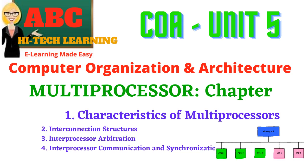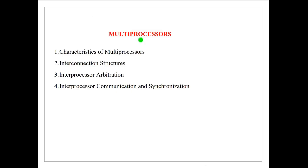Hello viewers, in this video we are going to discuss the first topic in the multiprocessor chapter, that is characteristics of multiprocessors, followed by the key differences between the tightly coupled and loosely coupled systems. The details about interconnection structures, interprocessor arbitration, and interprocessor communication and synchronization are made in the subsequent videos.